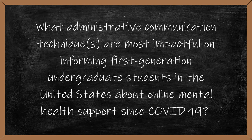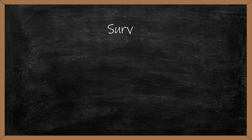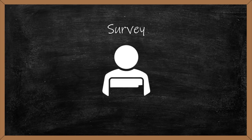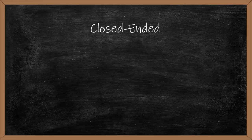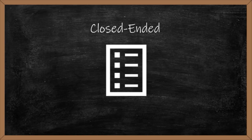We are interested in making a generalizable conclusion about what has been most impactful for first-generation undergraduate students across the United States—a very large population size. Surveys, a popular quantitative research method, contain questions designed to gather specific information from participants such as their opinions, preferences, behaviors, or any other information useful in addressing the research question. For this research study, we are conducting an online survey among first-generation undergraduate students from across the United States, sent out via email. The questions included are closed-ended, meaning each question is followed by predefined answer choices, and ask respondents about their opinions, experiences, and preferences regarding the different communication techniques used by their university's administration to inform students about online mental health support since COVID-19.